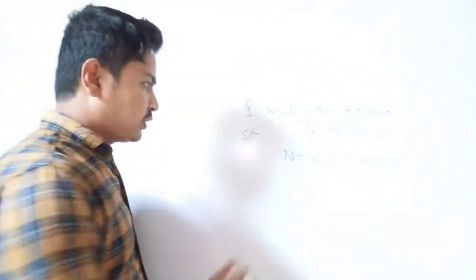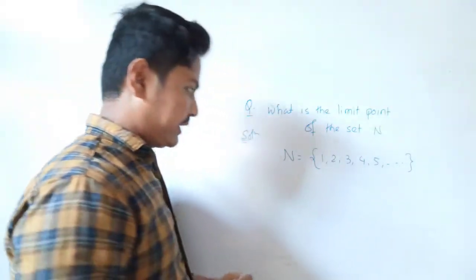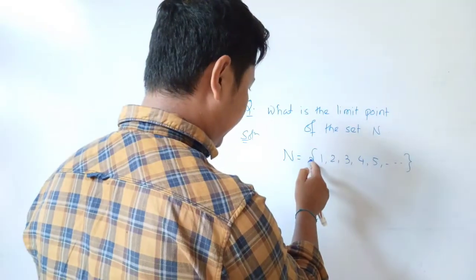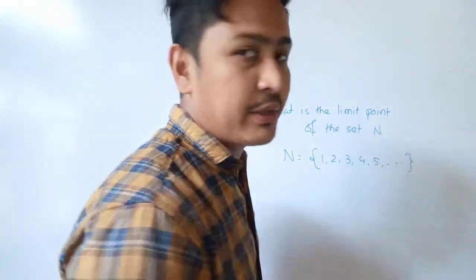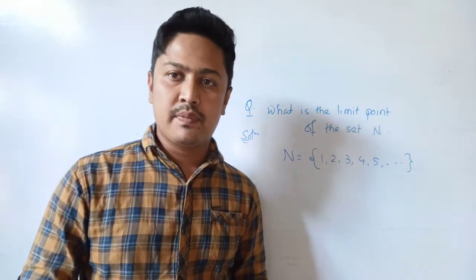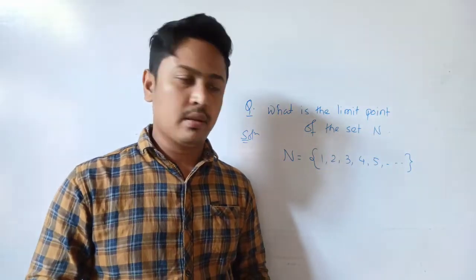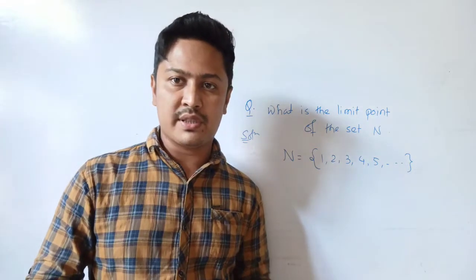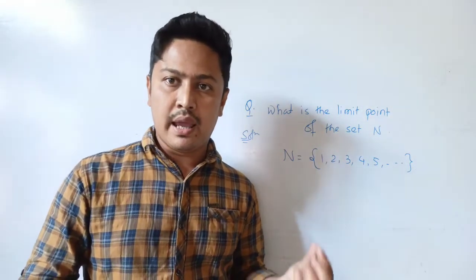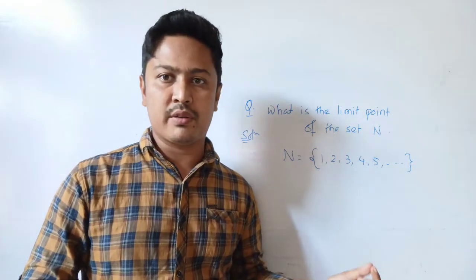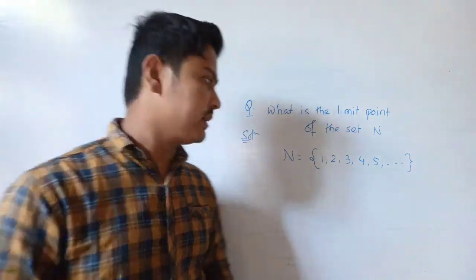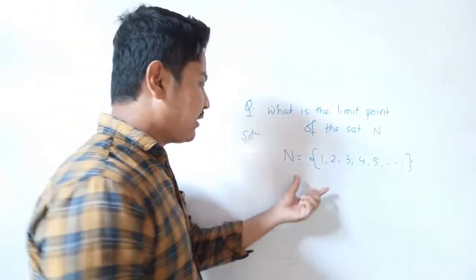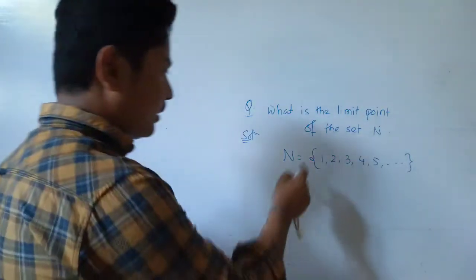A point is said to be a limit point of a certain set if every neighborhood of that particular point contains an infinite number of elements of that particular set.